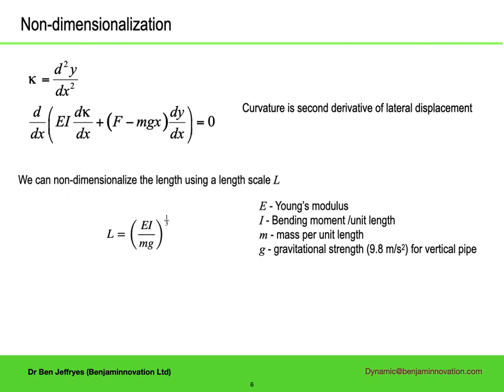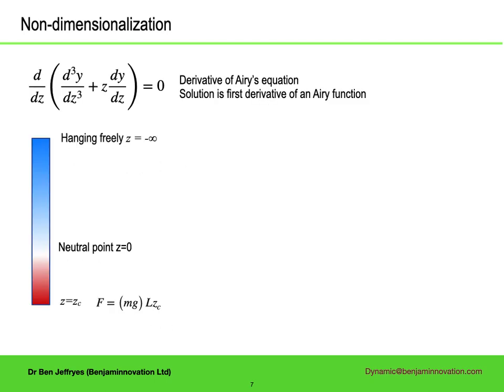We can non-dimensionalize using the characteristic length L, and convert to a non-dimensional coordinate z that is scaled by L, and origin shifted to the neutral point. This was probably first done by Lubinsky about 1950. What results is an equation for dy by dz, and it's the derivative of a well-known equation, Airy's equation, for which the solution is the derivative of an Airy function.